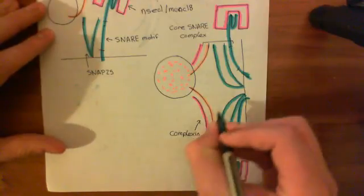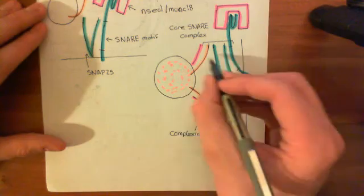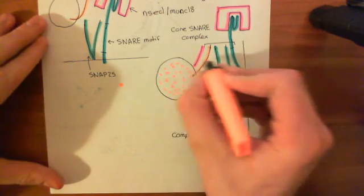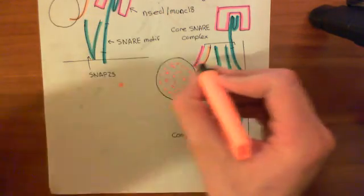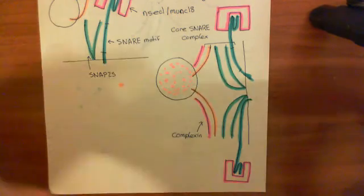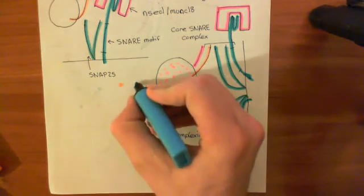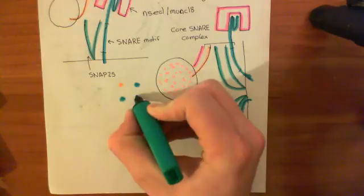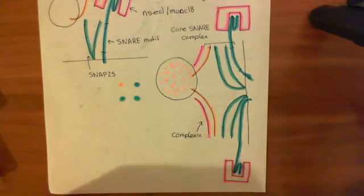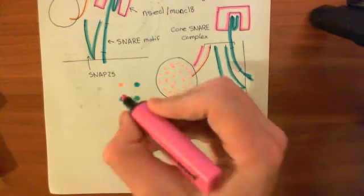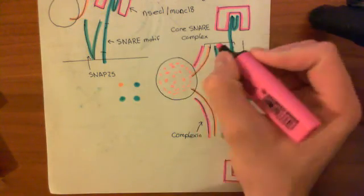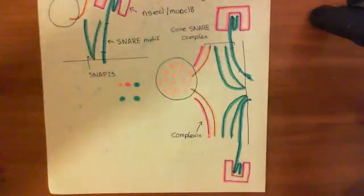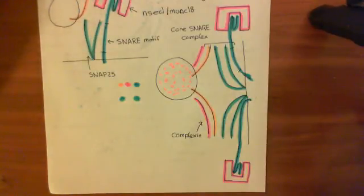Now if we again look at the arrangement of these four alpha helices. So remember I drew this picture of, if we chop through this core SNARE complex, I sort of take a transverse section. What we'll find is, here's the synaptobrevin-2, here's the syntaxin-1, and here are the two alpha helices provided by SNAP25. So you've got these four in a square like this. What we find is that this complexin alpha helix, which is again an alpha helix sitting alongside these alpha helices, it sort of sits in between synaptobrevin and syntaxin-1. So it sits in between synaptobrevin-2 and syntaxin-1.